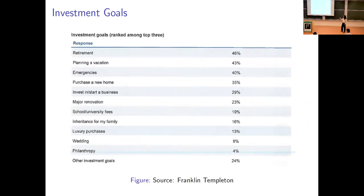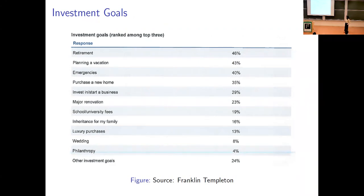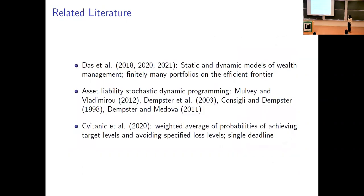Here are some examples of the types of goals people have. A survey asked people to put down their top three most important goals. The results receiving the most votes include retirement planning, vacation, emergency purchase, and a new home — from a Franklin Templeton survey.